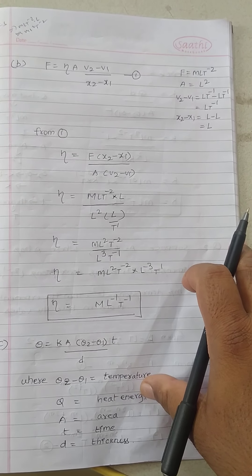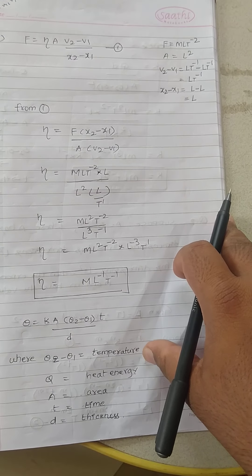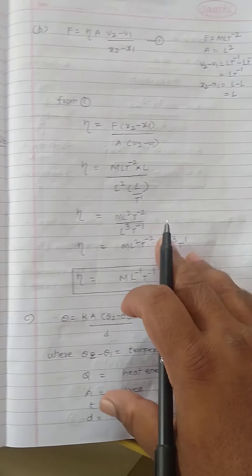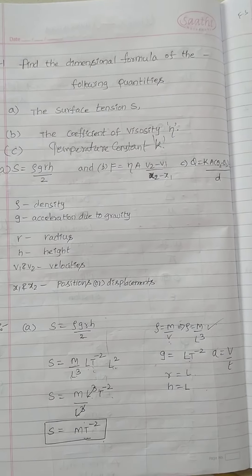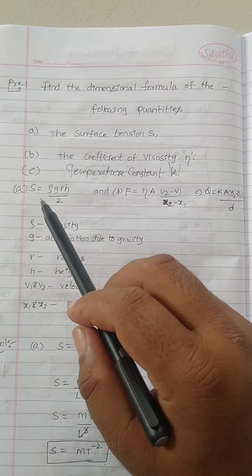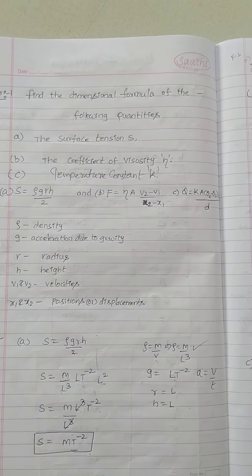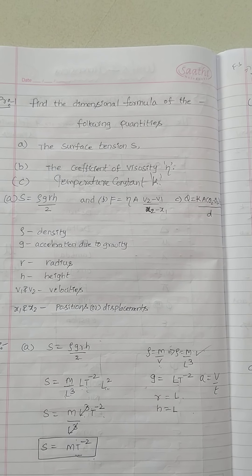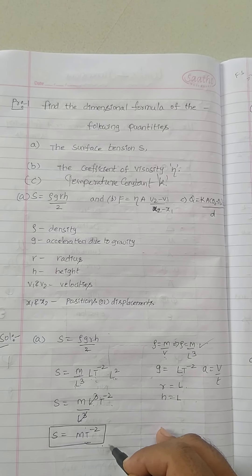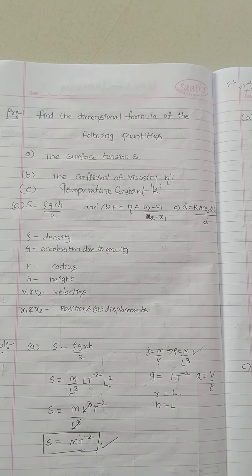Now we want to discuss one more dimensional formula — how we can write a dimensional formula for one more physical quantity. We already discussed in the last video the surface tension formula: surface tension is ρgRh/2. So the dimensional formula for surface tension we got is MT⁻².